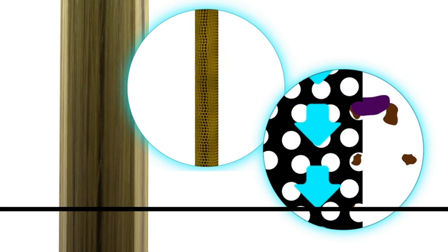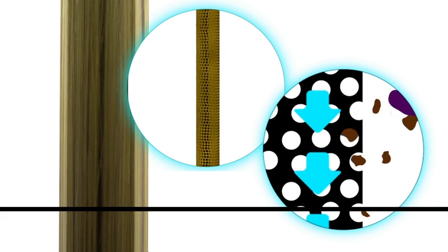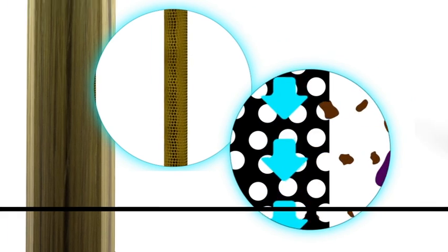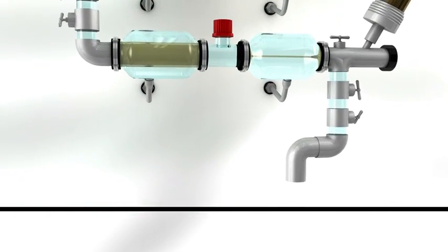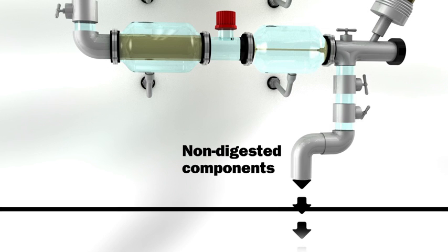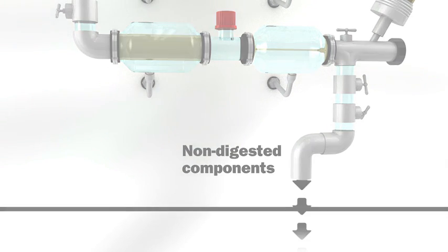This all ensures a dynamic environment just like that found in the human body. At the end of TIM 1, the non-digested and non-released components are collected for further analysis and can also be used as input for TIM 2.